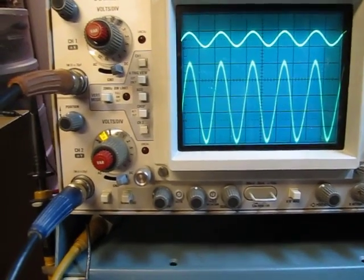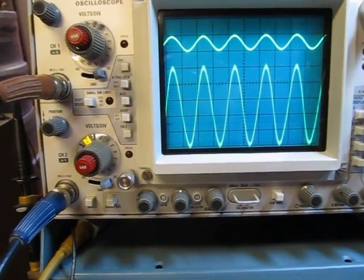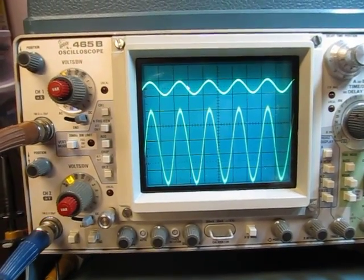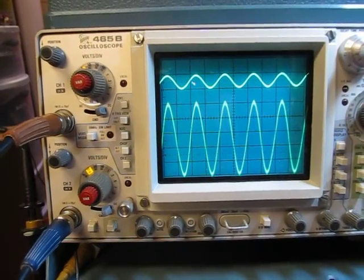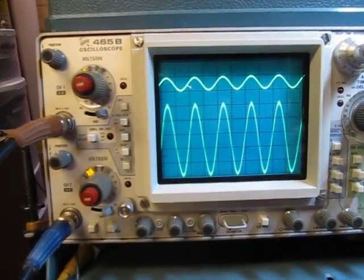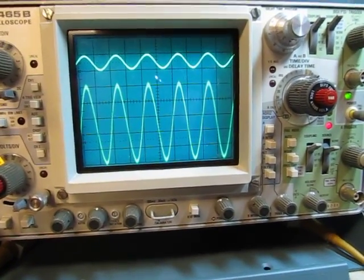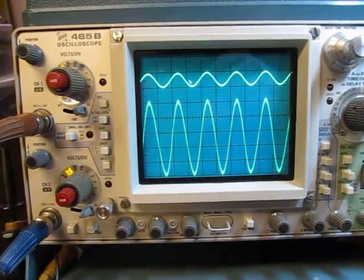A couple of scopes that I have here that do have it, the response is different from scope to scope. So it's something you just want to be aware of. It's not going to be a perfectly calibrated thing. But it does give you a way of looking at some very low level signals and also give you a way of buffering signals that you might be looking at in your circuit and using them to drive other circuits or other instruments. So anyway, hope you found that helpful.